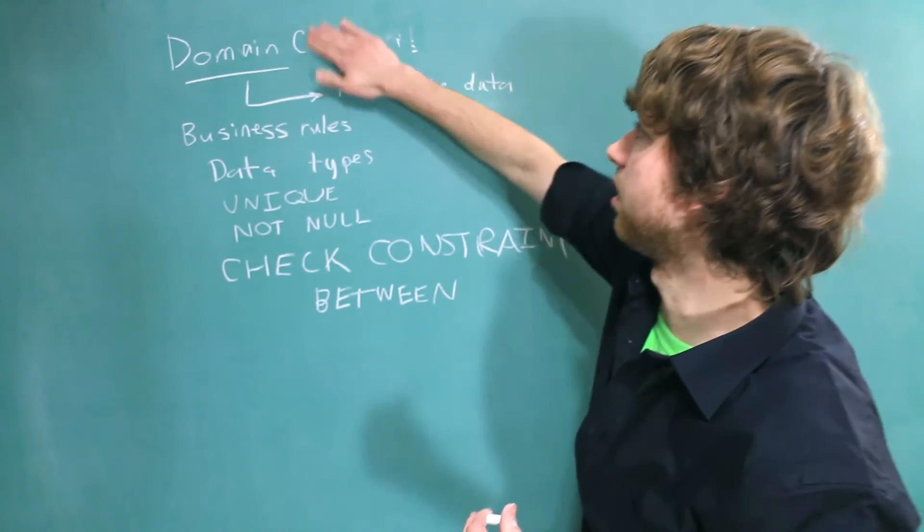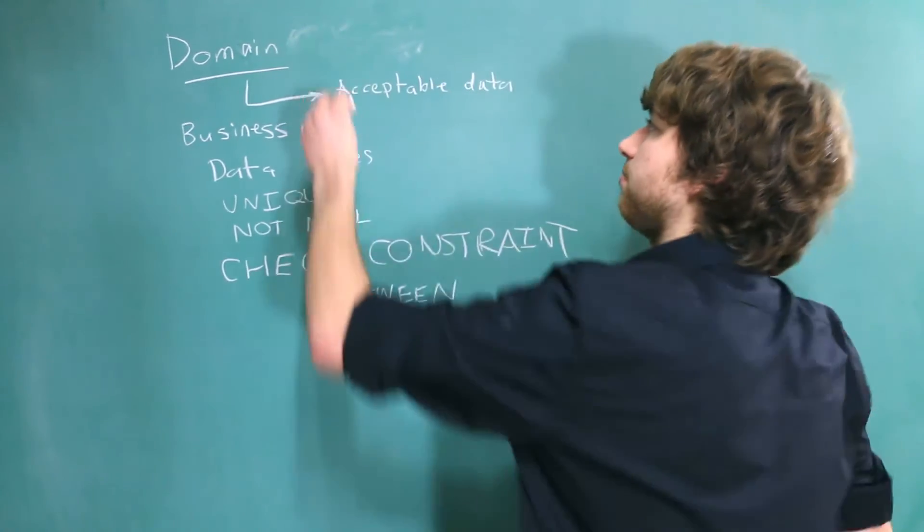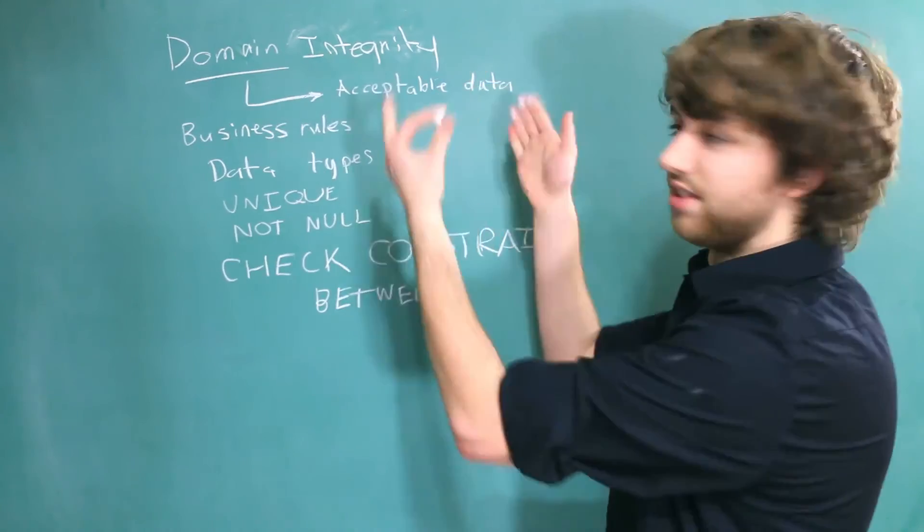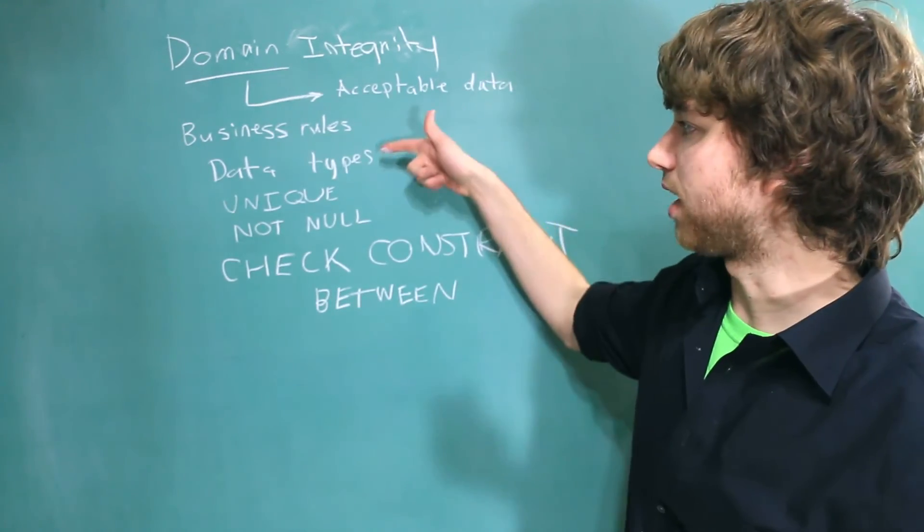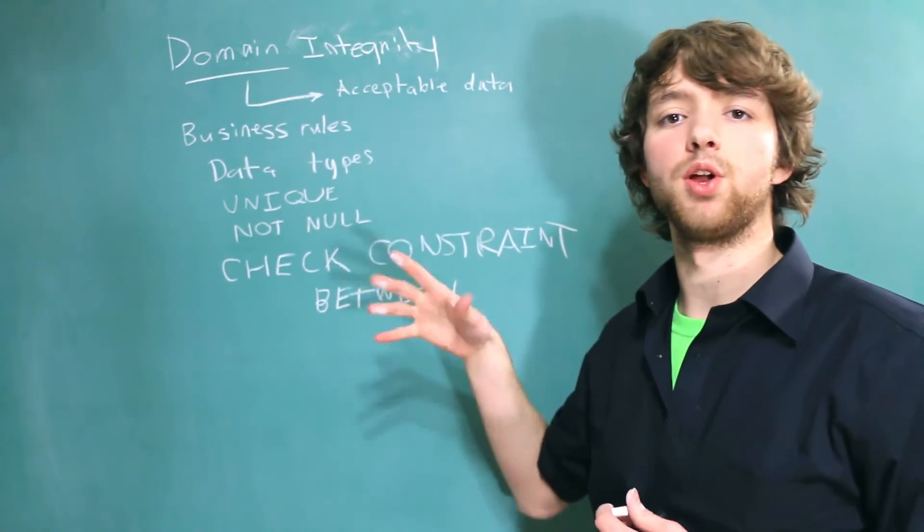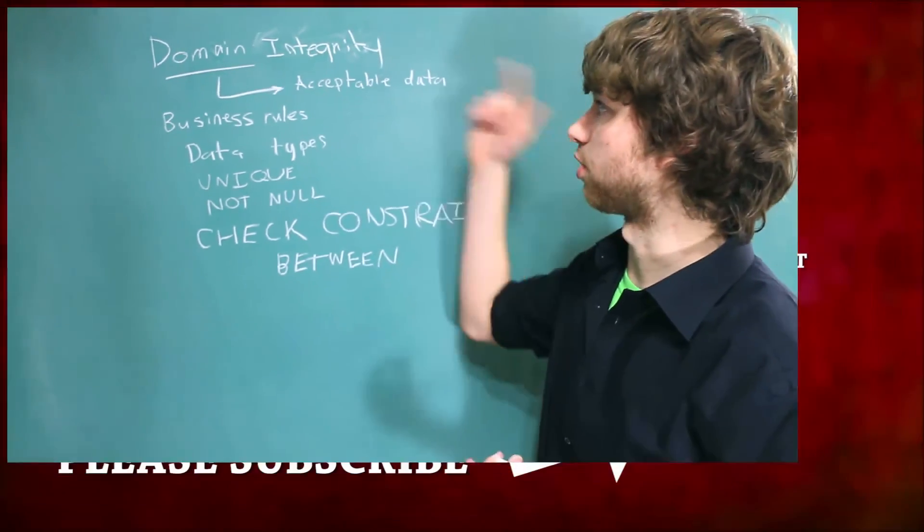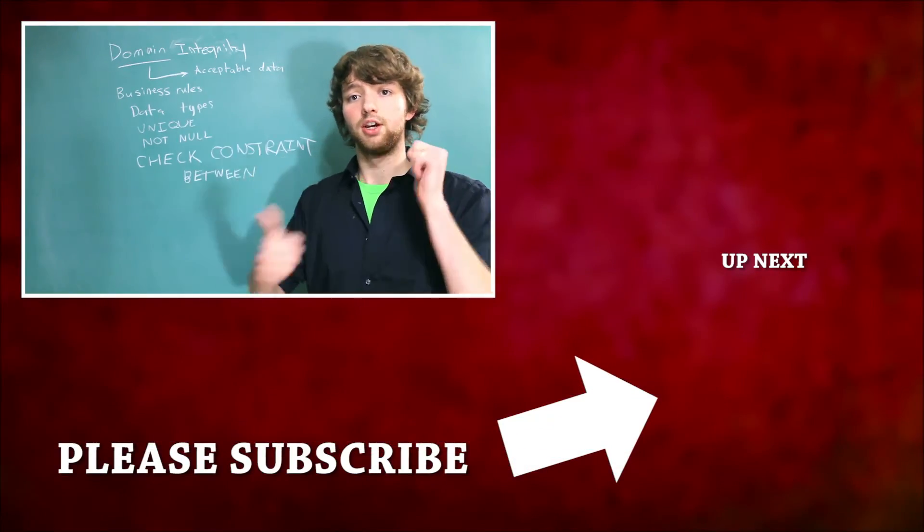So all of this is a way to protect our domain integrity. I wrote constraints up here, but more generally, this should be integrity. And then these are example of constraints we can use to force domain integrity. Making sure we have the right data type and the right constraints, as well as all of the specific check constraints, is really all we're going to need to make sure our domain integrity is being a-okay.